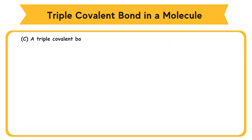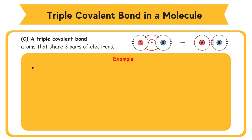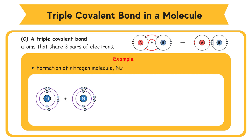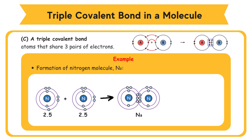Formation of Triple Covalent Bond. A triple covalent bond is a covalent bond formed by atoms that share three pairs of electrons. Example: formation of nitrogen molecule N2. Lewis structure — electron arrangement of nitrogen atom is 2.5. Nitrogen atom needs three electrons to achieve a stable octet electron arrangement. Two nitrogen atoms N each contribute three electrons for sharing. Two nitrogen atoms N share three pairs of electrons to form triple covalent bonds. Both nitrogen atoms in nitrogen molecule N2 achieve the stable octet electron arrangement. A nitrogen molecule N2 is formed.